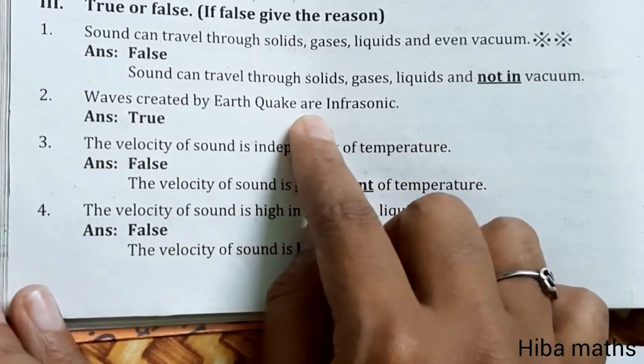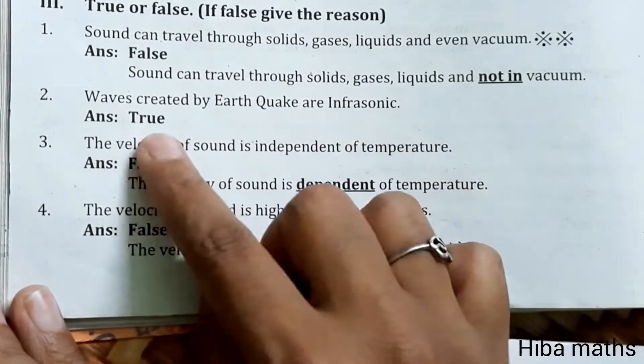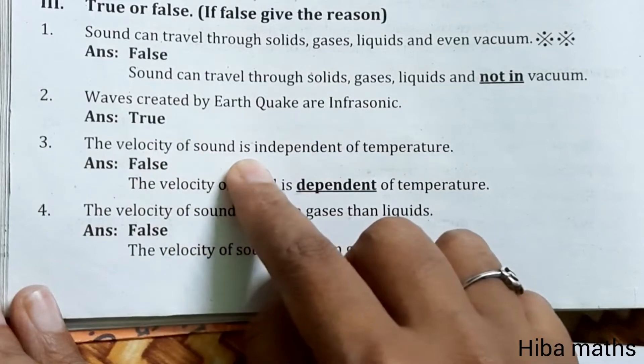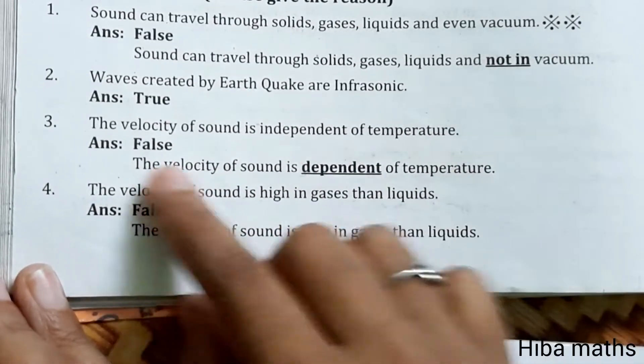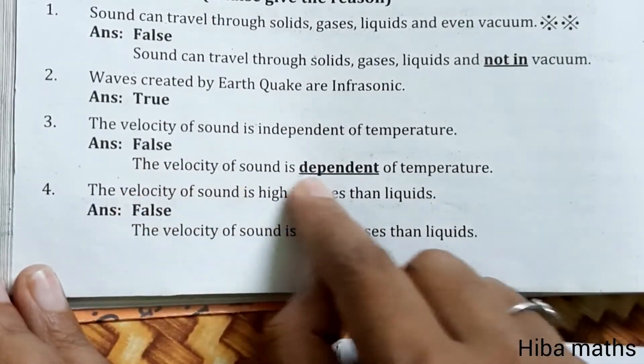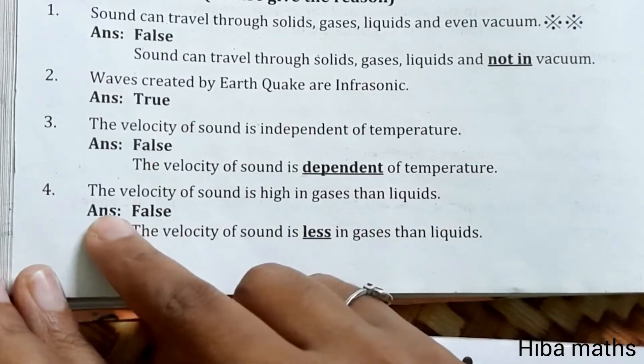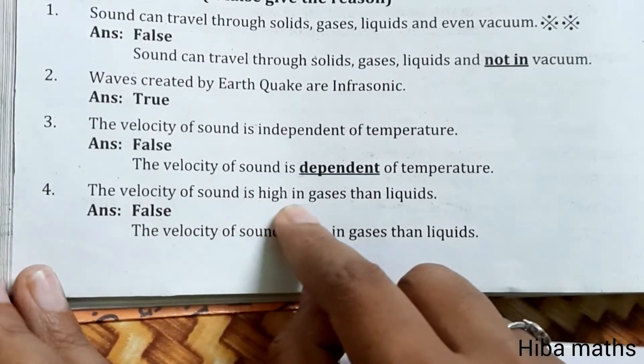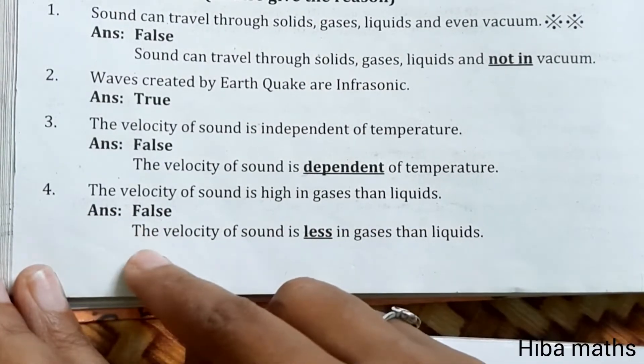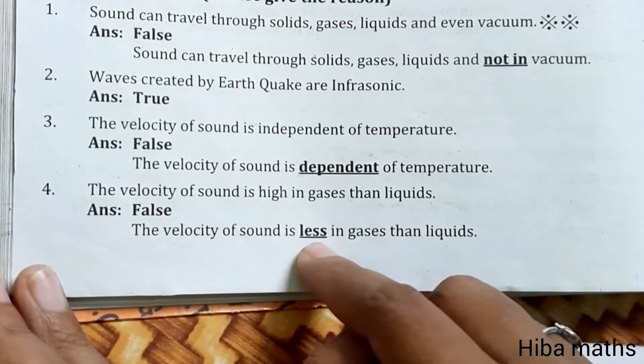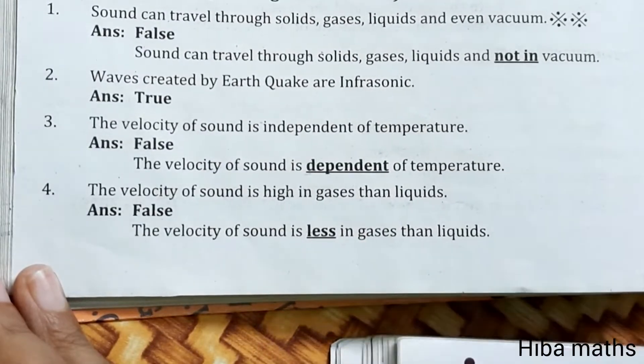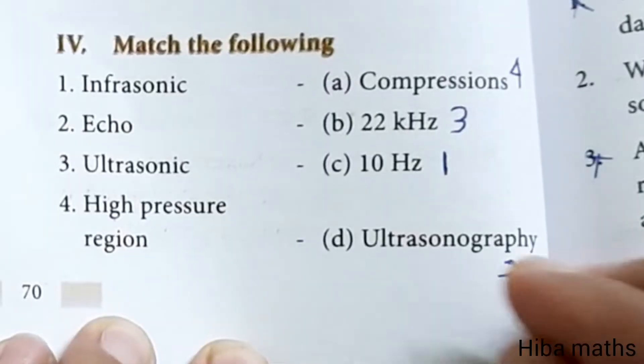Second question: waves created by earthquake are infrasonic. True. The velocity of sound is independent of temperature. False. The velocity of sound is dependent on temperature. The velocity of sound is high in gases than liquids. False. The velocity of sound is less in gases than liquids.